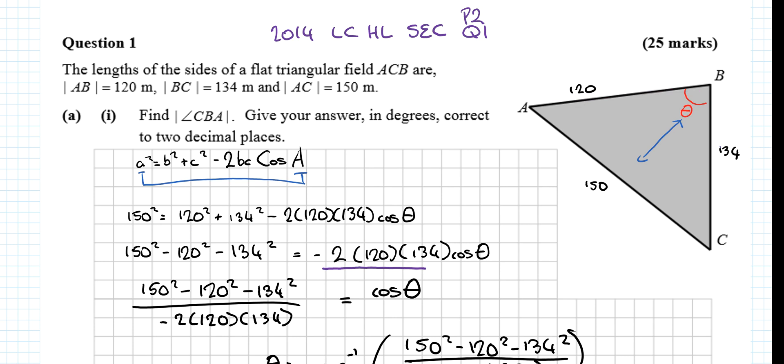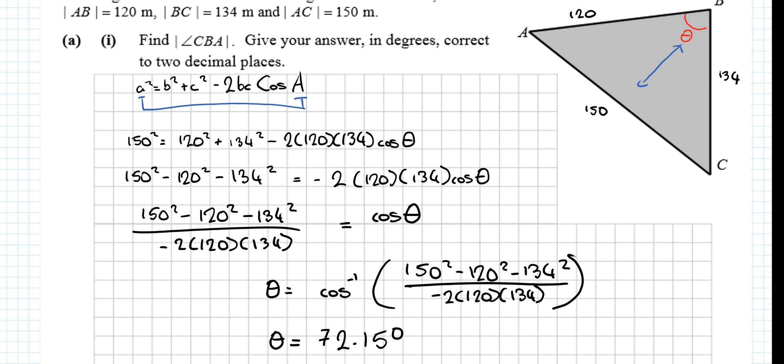So I subtract 120 squared and 134 squared from both sides. A lot of people will make the mistake of just adding this or bringing it over, which is terrible language, adding it to the left-hand side to get cos theta on its own. But remember, how is it connected? It's connected via multiplication. What's the opposite of multiplication? Division. So we must divide by that. Then we take the cos inverse of this whole thing on the left-hand side to get theta on its own, and I get 72.15. Making sure we go to two decimal places, as the question asked.